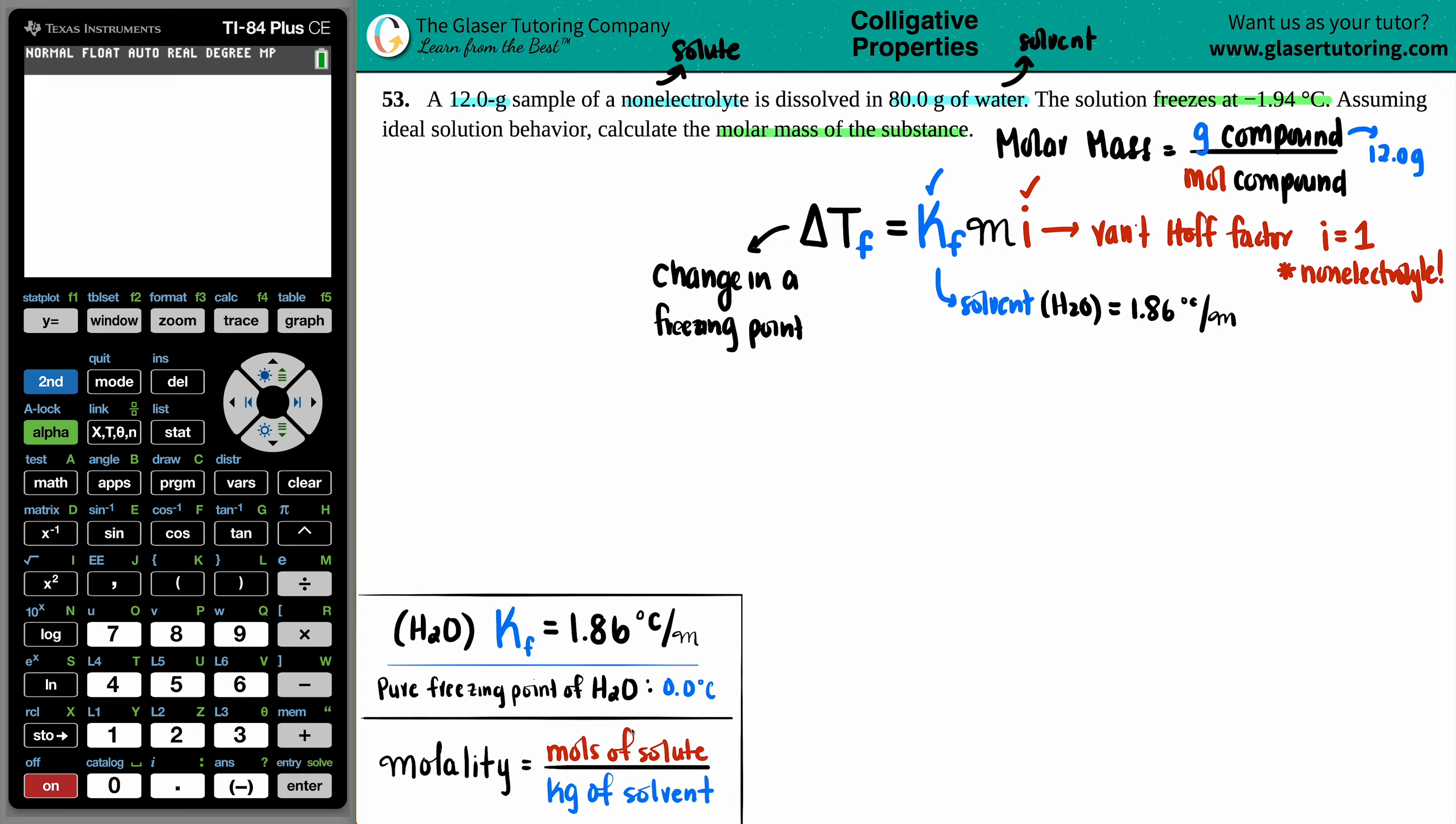And just know that when you're doing a freezing point, the freezing point of your solution is always going to be lower than the normal. So if you get a freezing point that's higher than your pure normal freezing point, something went wrong, go back. That's like a good trick for multiple choice questions. But now what would be that change? Well, if we know that the pure freezing point for water is 0 degrees Celsius, and the solution one is negative 1.94, we can just subtract these two to get the change.